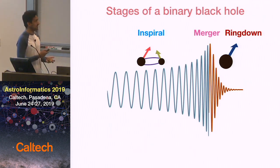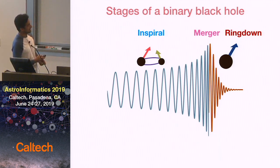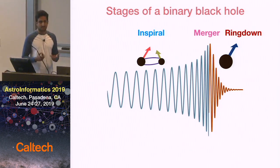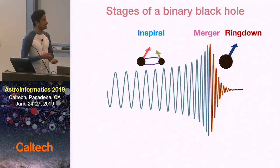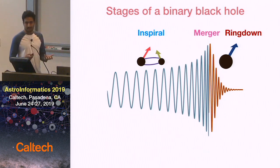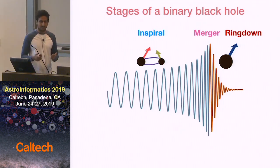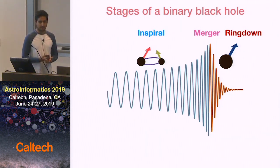For any given binary black hole, we'll have two masses, which I'm representing here, and we'll also have two spins, which are represented by these arrows. The spin is just how fast the black hole is rotating, so it's a three-dimensional vector. Overall, we'll have eight dimensions: two masses and two spin vectors, each of which is a three-vector. So it's a very high-dimensional problem.